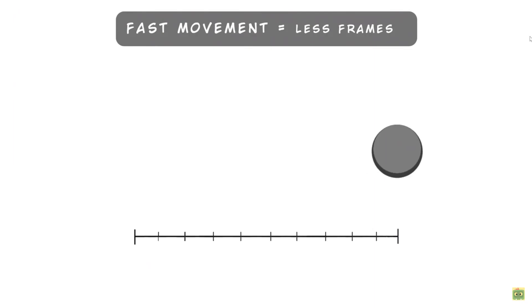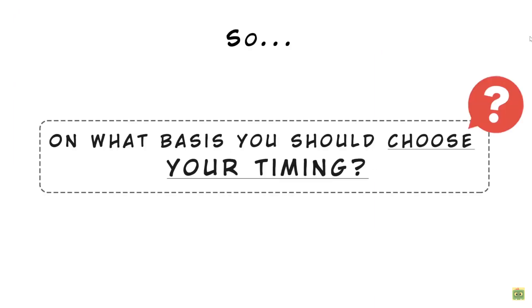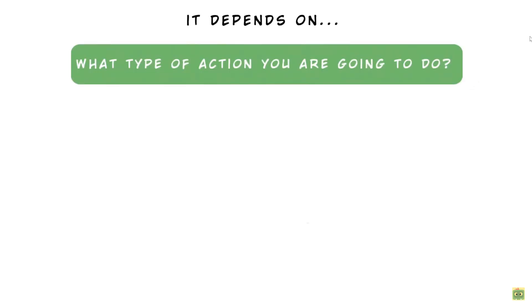If you have to reproduce a fast movement, you need fewer frames. For a slower movement, more frames. On what basis should you choose your timing? It depends on different aspects. For example, if you are creating an animation of an object based on physical reactions and properties, like a bouncing ball,